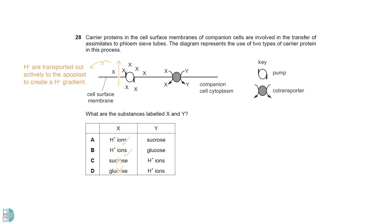At the companion cell, protons are transported out actively to the apoplast to create a proton gradient. It will then diffuse back to the companion cell, down its concentration gradient. Sucrose is co-transported with protons into the companion cell.